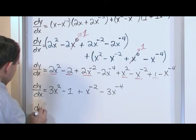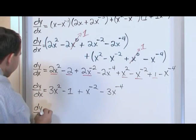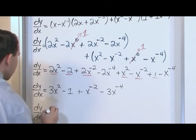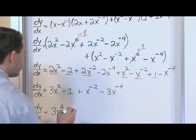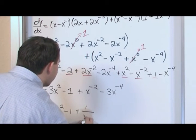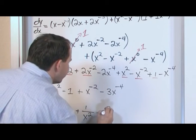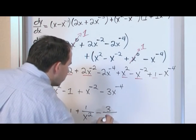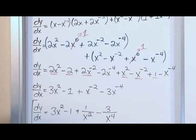dy/dx. But since the original problem had fractions in there instead of these negative exponents, I'll just do the courtesy of putting it back in that form for you. So 3x squared minus 1 plus 1 over x squared, making it a positive exponent, minus 3 over x to the 4th power.